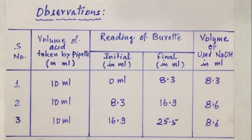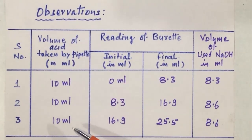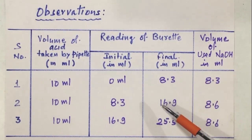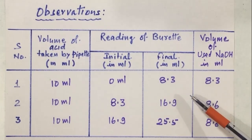This is our observation table. Here we have recorded some readings. First column shows volume of acid taken by pipette in ml. Second column shows reading of burette, which is divided into two parts: initial reading and final reading of burette containing NaOH solution. Last column shows volume of used NaOH in ml. By using above readings, we calculate the normality of NaOH solution.